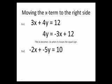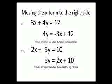In this example, the x term is negative 2x, and when it crosses the equation, notice that it became positive 2x.